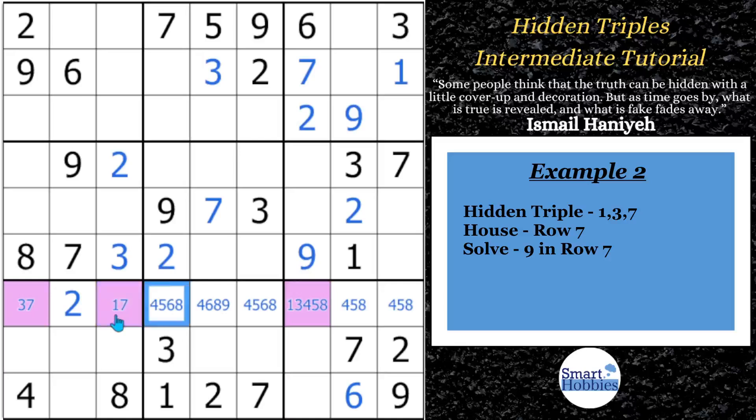And so you can get rid of any other candidate that's not a 1, 3, or 7. So this 5, 6, and 9, you can remove there. And then this 4, 5, and 8 can be removed from right there. The reason being, if you try to put one of those candidates in here, for example, you put a 4 in there.